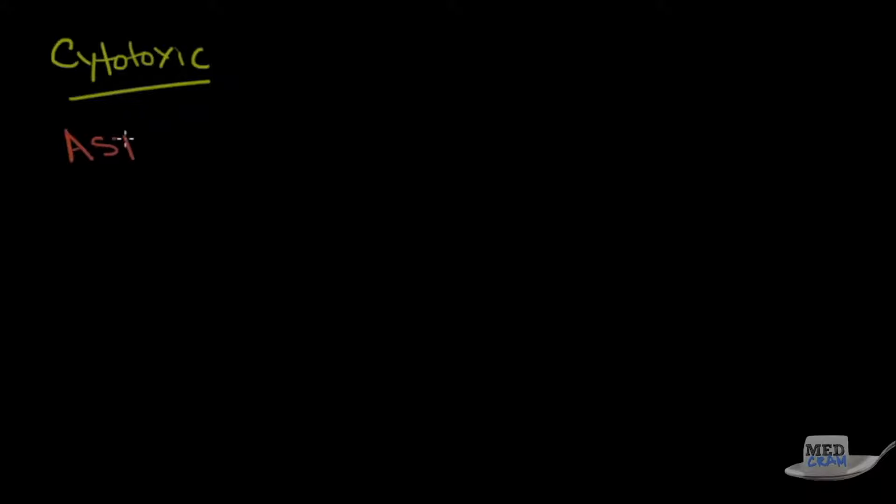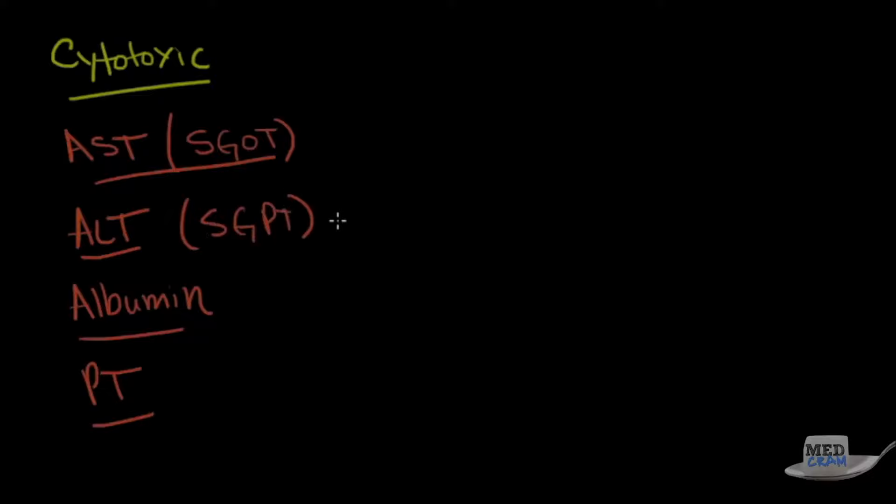So what are the cytotoxic blood tests? Well, the first one is the AST. This is also known as the SGOT. This enzyme is actually made in the liver. In fact, it's not specific to the liver. It's in a number of cells, but also in the liver. The other one is the ALT, albumin, and the PT. By the way, the ALT is also known as the SGPT.